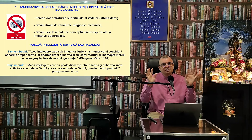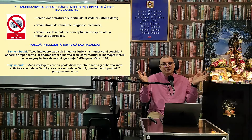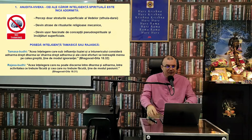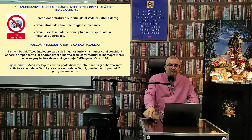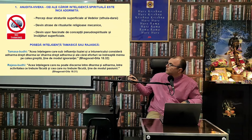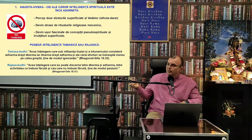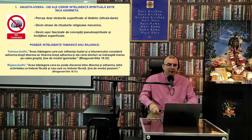Oamenii gândesc 'I'm not religious, I'm spiritual' — de ce? 'Pentru că fumez ayahuasca, de aceea eu sunt spiritual.' Bhagavad Gita descrie două tipuri de inteligență care fac parte din Anudita Viveka: Tamasica Buddhi și Rajasica Buddhi — inteligența în modul pasiunii și în modul ignoranței.